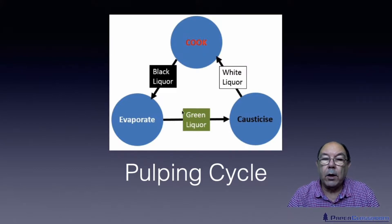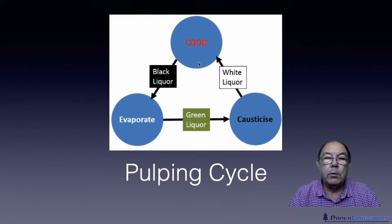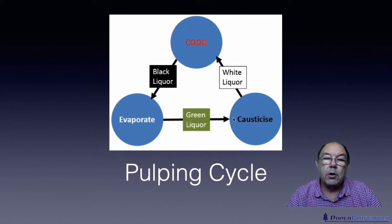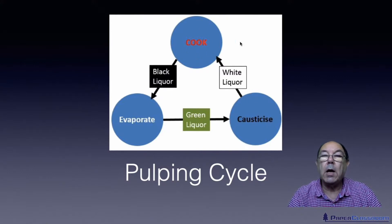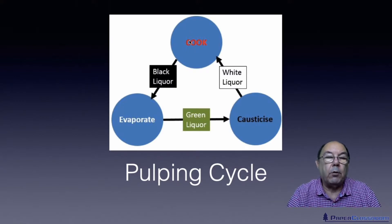We collect that ash and dissolve it in water, which produces what we call green liquor. No chemical process is 100% efficient, so some chemicals are lost and we need to top up with extra sodium hydroxide. We do that in what's called the causticisation process — by causticising the green liquor we regenerate our initial white liquor, which then goes back into the cooking vessel along with a new supply of fibres. This is very chemically efficient, making it relatively cheap to operate compared to other pulping methods.